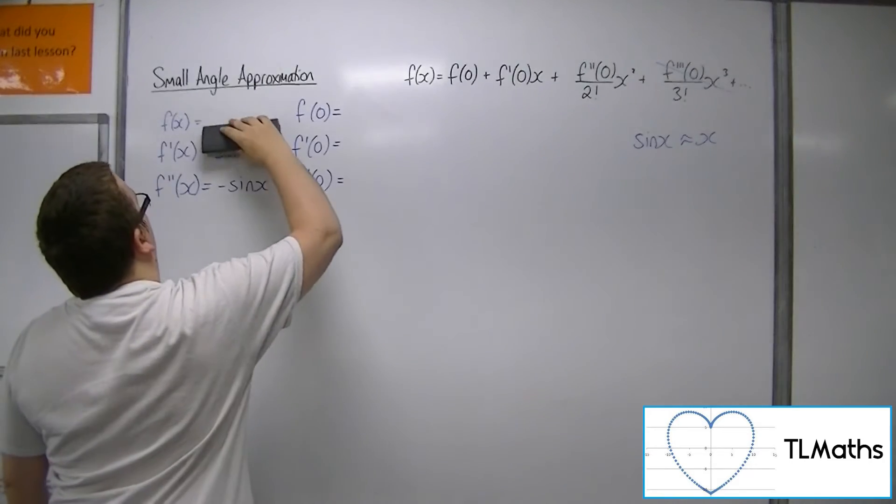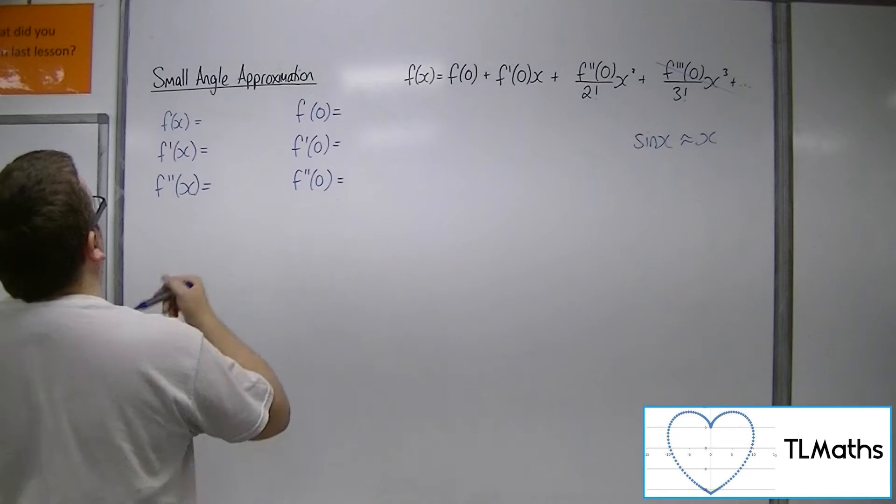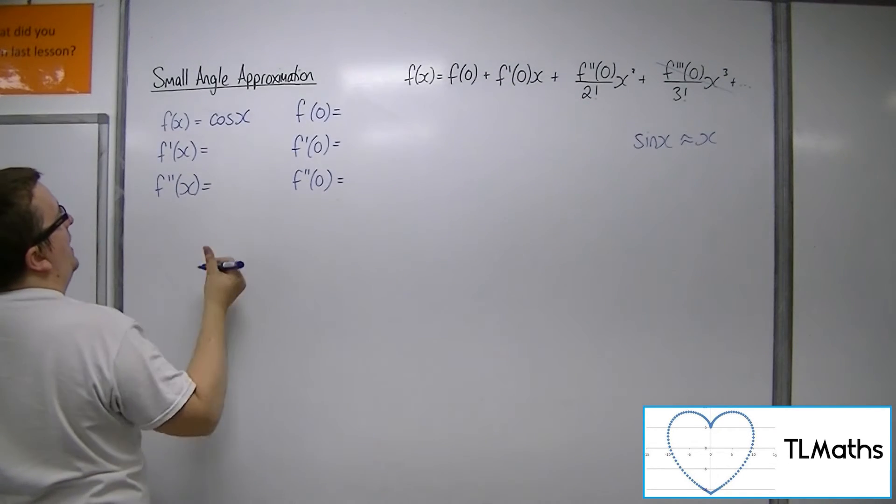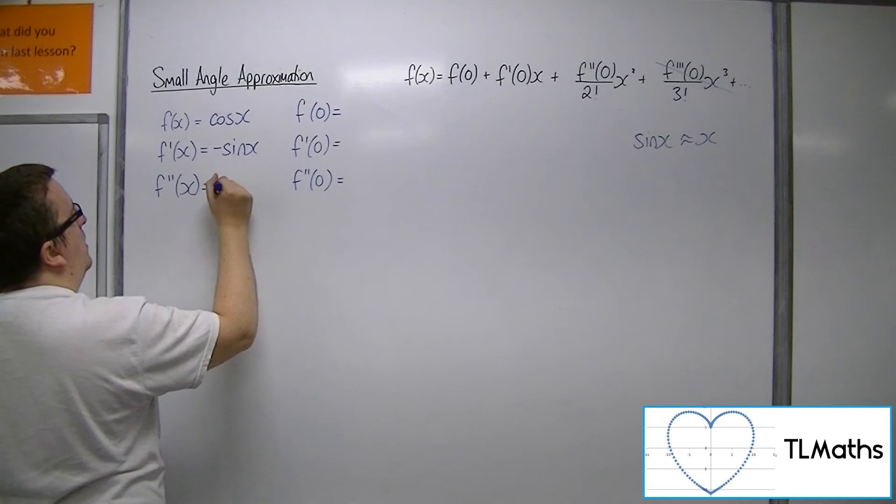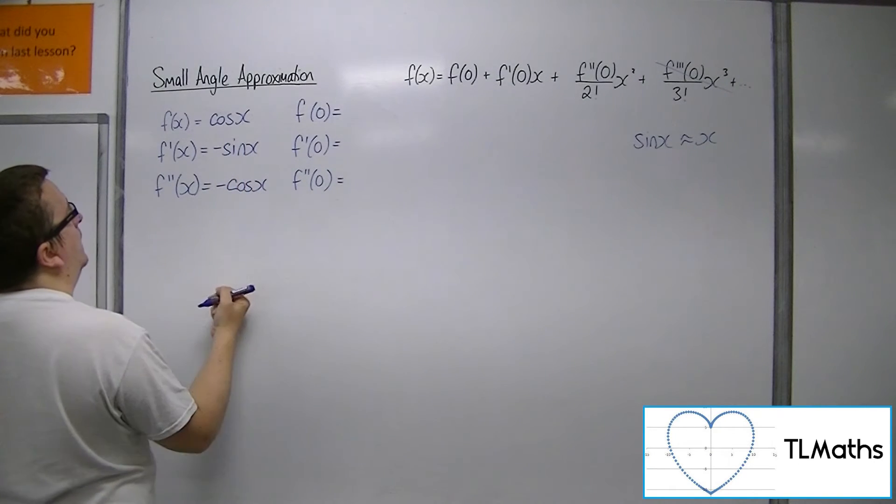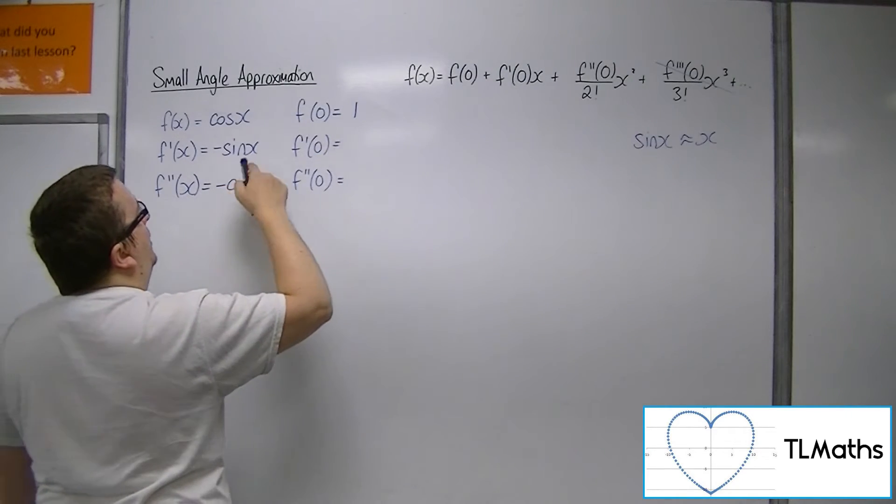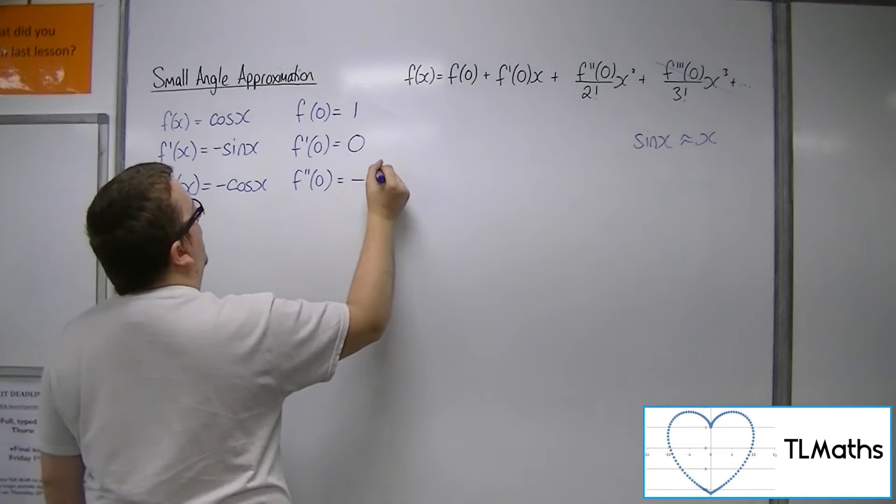So, for cosine, we have a similar story. If f of x is cos x, then f prime is minus sine, and f double prime is minus cos. So, f of 0 will be 1, f prime of 0 will be 0, and f double prime of 0 will be minus 1.